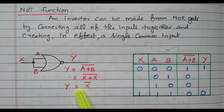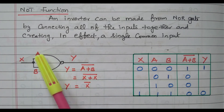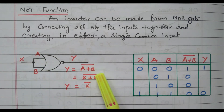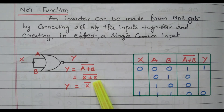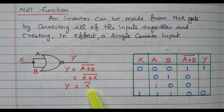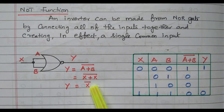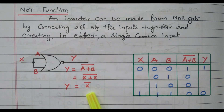We will verify the output. Y is nothing but A plus B, the whole bar. If two inputs are available it will be A plus B whole bar. OR gate means A plus B; NOR gate means A plus B whole bar. Now A is also X and B is also X, so X plus X, and X plus X can be written as X bar. So the output is nothing but X bar — the complement of the input — so we got the NOT operation.